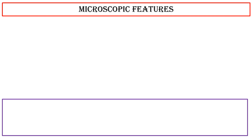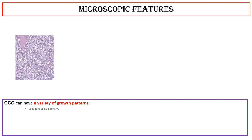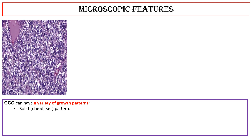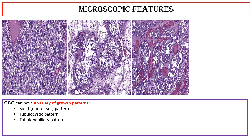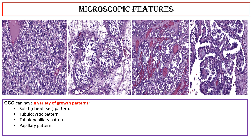Microscopic features: clear cell carcinoma can have a variety of growth patterns, including solid sheet-like patterns, tubulocystic patterns, tubulo-papillary patterns, papillary patterns, or a combination of the previous patterns.